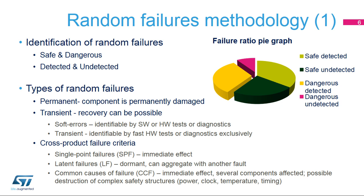Random failures can cause permanent or recoverable errors. Hard failures cause permanent physical damage to the component, and the system is no longer able to operate normally. If no compensation is possible, the system has to be put into a safe state, for example cutting power to actuators, until it is repaired. Random transient or soft errors can be correctable, and some kind of recovery process can be applicable. Soft error failures can be managed by both hardware and software, while transient failures need fast hardware methods exclusively.